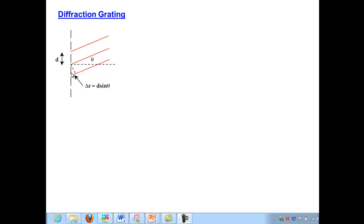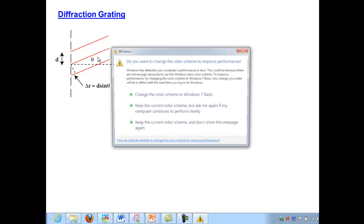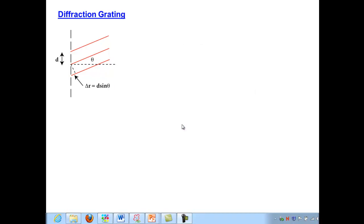And since we can apply that logic to the next set of pairs moving up, and then the next set after that, as well as all the pairs below this point, then the condition for constructive interference is going to be the same for all the pairs. And that means if the path difference is equal to an integer multiple of the wavelength, with the wavelength of light coming through the slits, then we'll see an interference maximum. We'll see a bright spot on the screen for a particular wavelength.